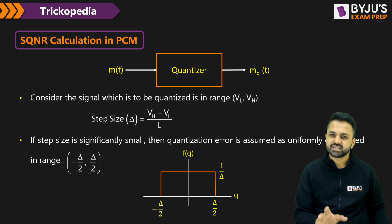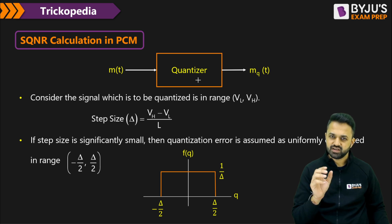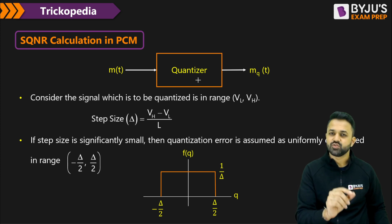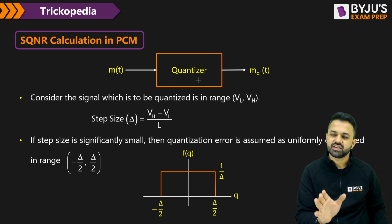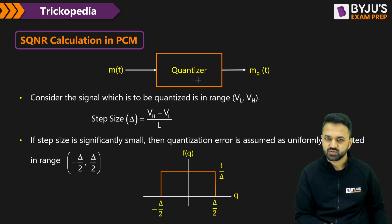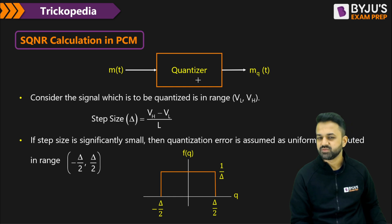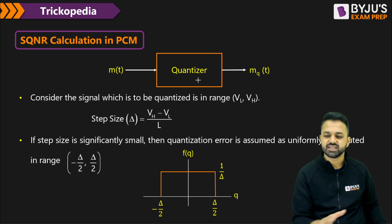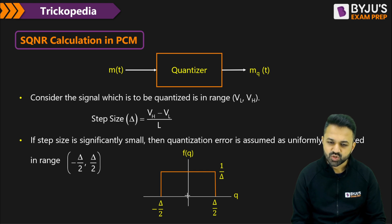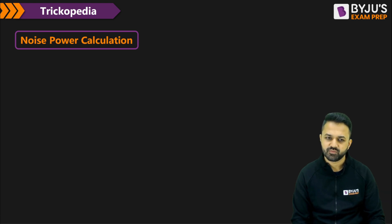The step size is delta. If the step size is sufficiently small, then in uniform quantization the quantization error ranges from minus delta by 2 to plus delta by 2. Considering this as a uniformly distributed variable over that range, the PDF height is 1 upon delta.